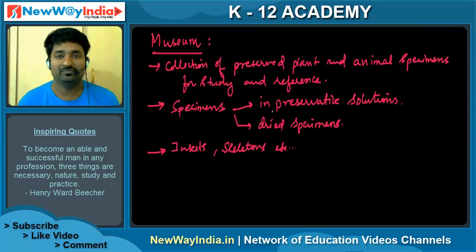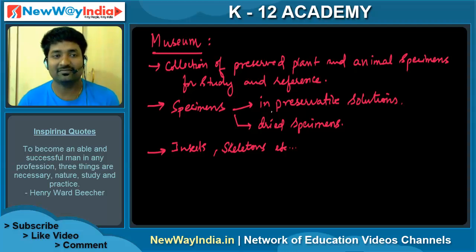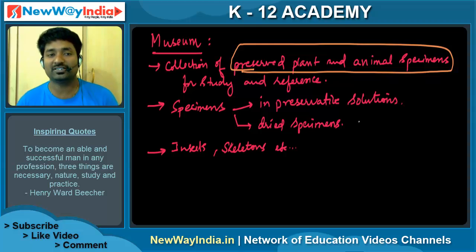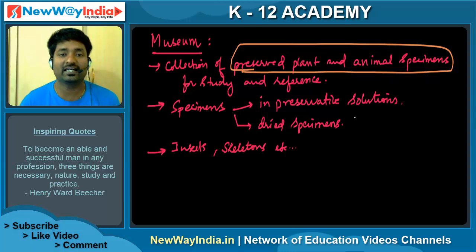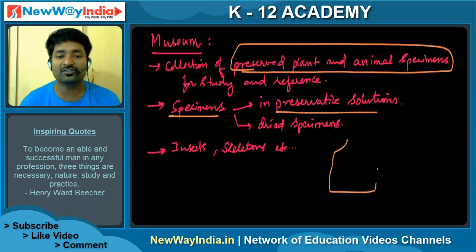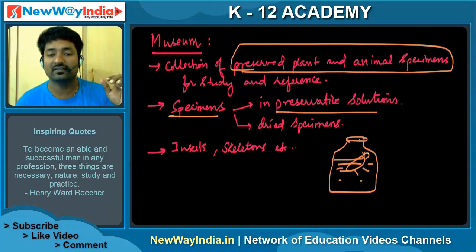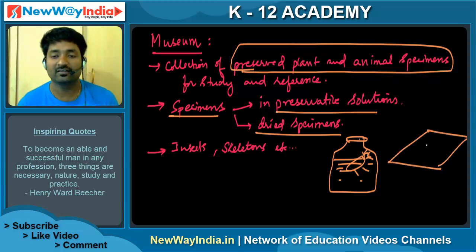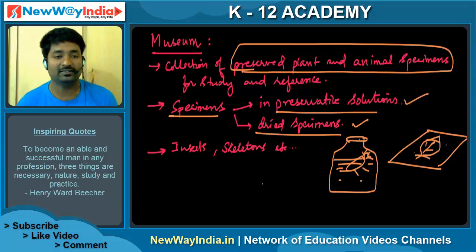The next one is a museum. You might have visited museums in your life. In biological museums, there is a collection of plant and animal specimens for study and reference. Generally, specimens are kept in bottles with a preservative solution — for example, insects placed in solution. Otherwise, dried specimens are maintained, similar to a herbarium. Museum collections include insects, skeletons, and other specimens.